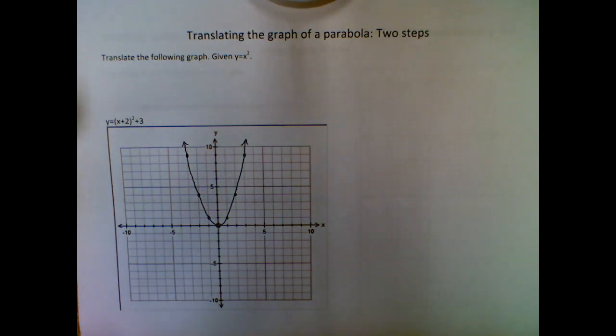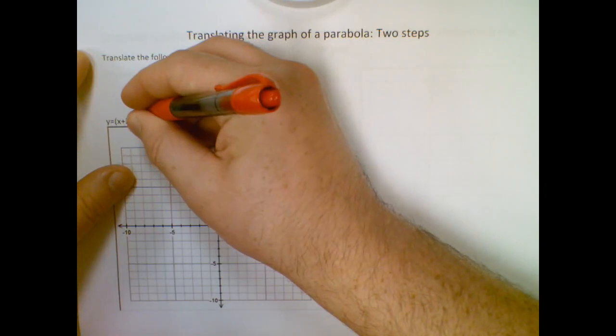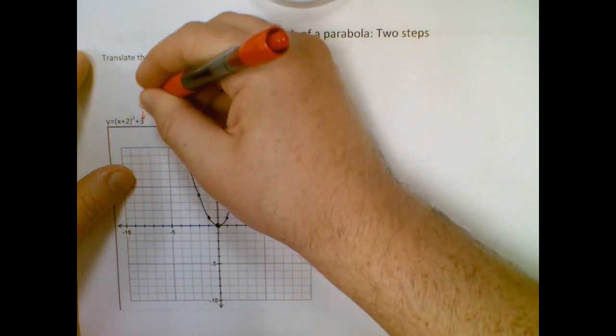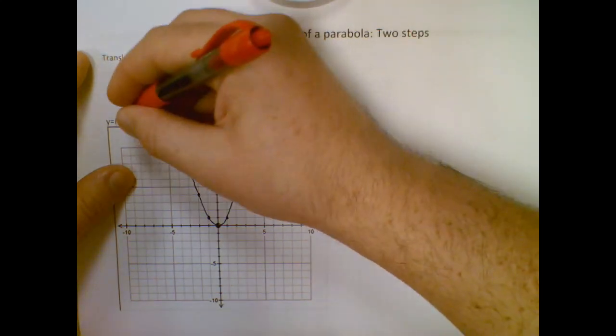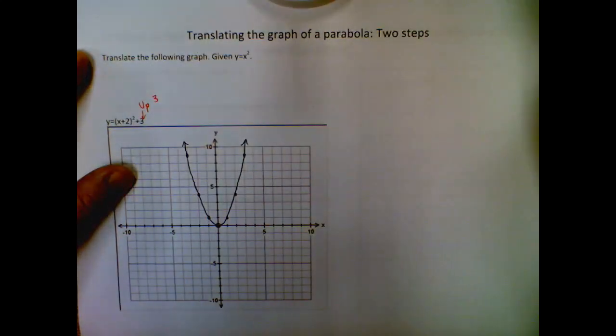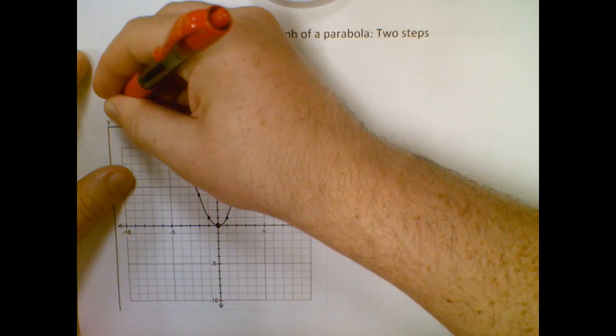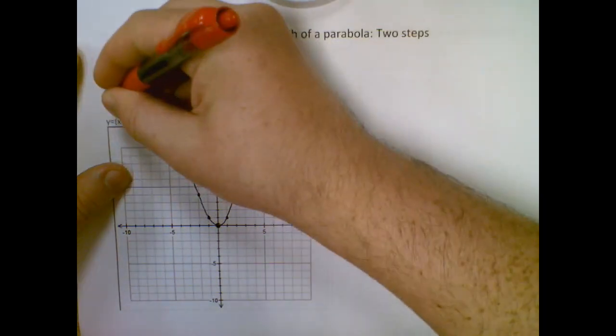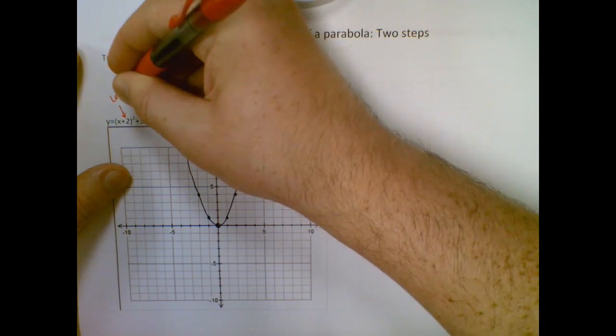So this has two translations. We have our exterior addition, which is telling us to move up or down. In this case, it's positive, so up 3. And our interior one, so we're adding it before we square it. And remember, these ones are backwards. So although it's addition, we are moving left instead of right, so it would be left 2.